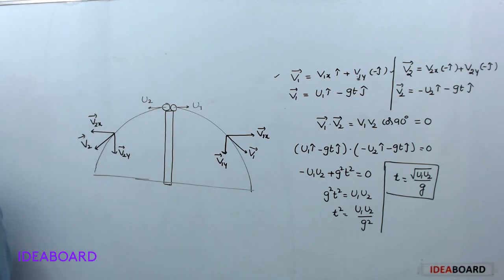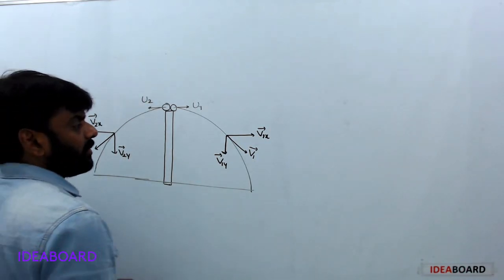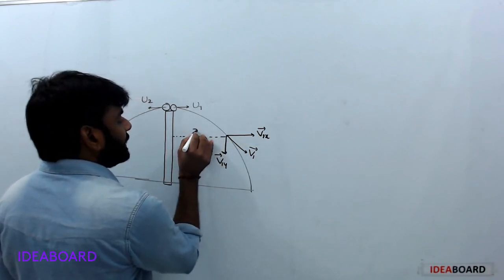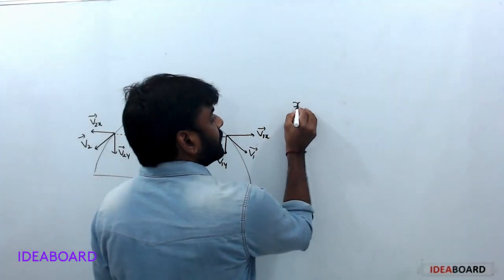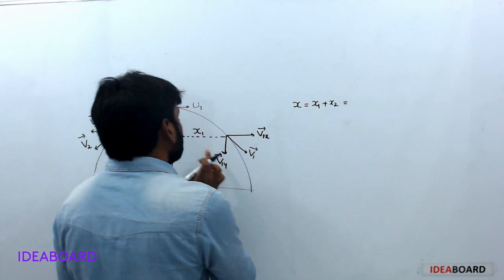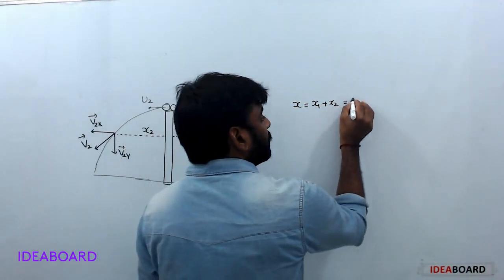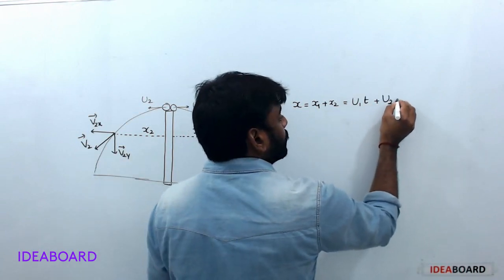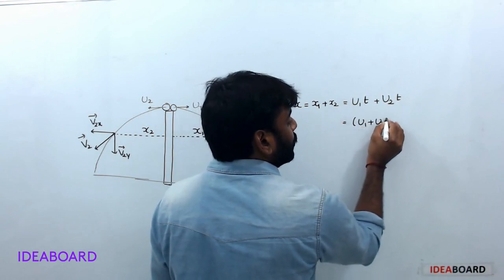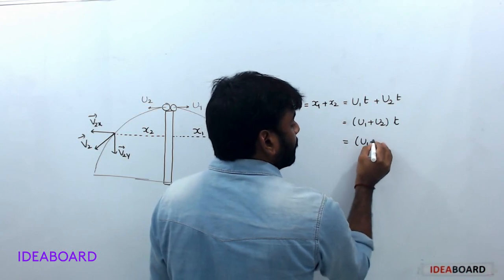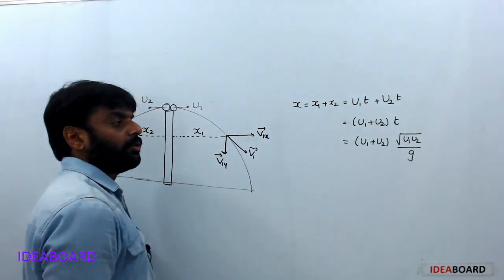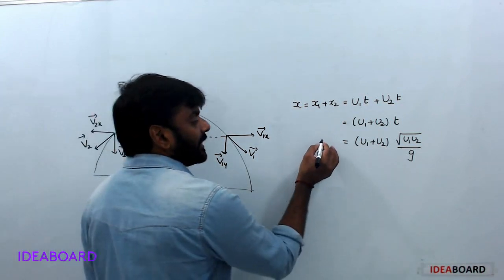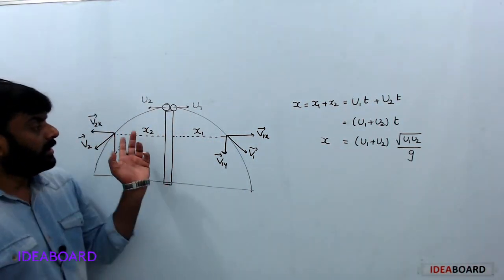At this time T = √(U1U2)/g, the velocity vectors are perpendicular to each other. The separation distance at this time is X = X1 + X2 = U1T + U2T = (U1 + U2) · √(U1U2)/g.